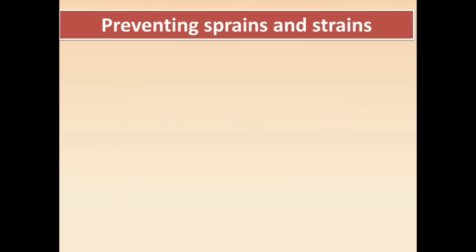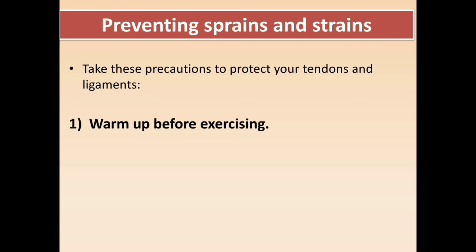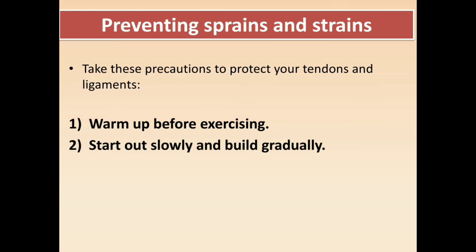Now we will learn how we can prevent sprain and strain. We should take these precautions to protect our tendons and ligaments. Number one: warm up before exercising. Number two: start out slowly and build gradually — we should not do heavy exercises right away but start slow and then increase intensity.